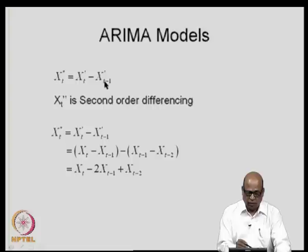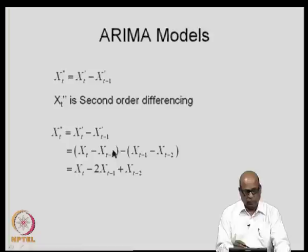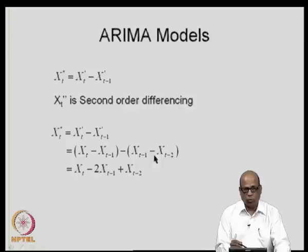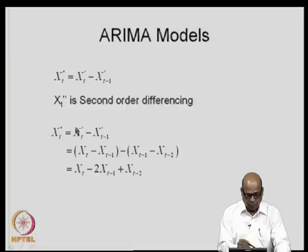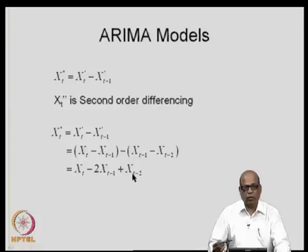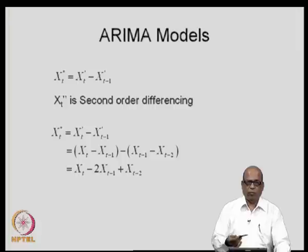Expanding the second order differencing: x'_t = x_t − x_{t−1} and x'_{t−1} = x_{t−1} − x_{t−2}, so x''_t = x_t − 2x_{t−1} + x_{t−2}. You can carry on to third, fourth order differencing, etc. In general, for most hydrologic applications using auto-regressive moving average type models, we go up to second order differencing — not more than that.